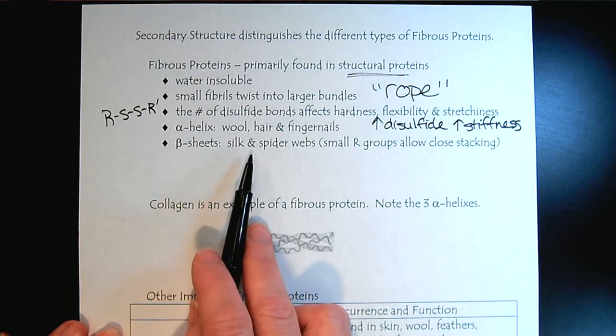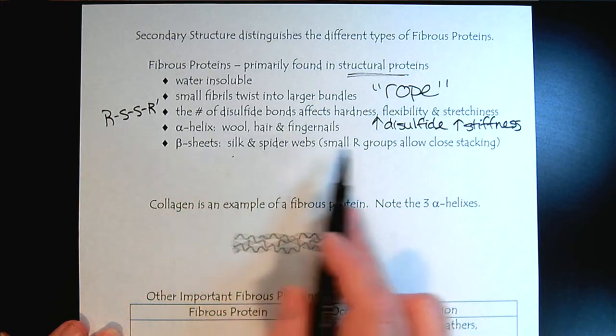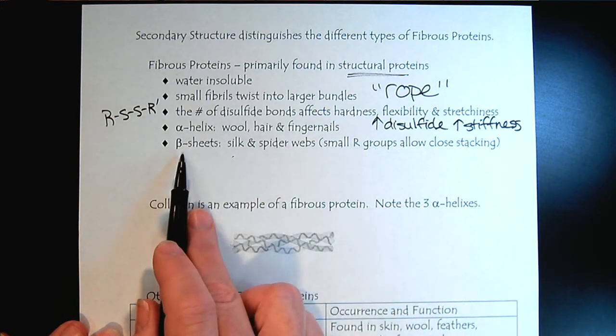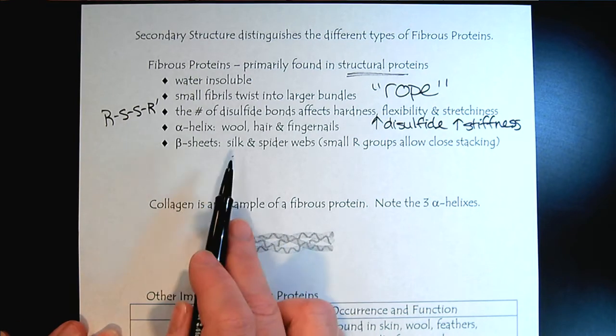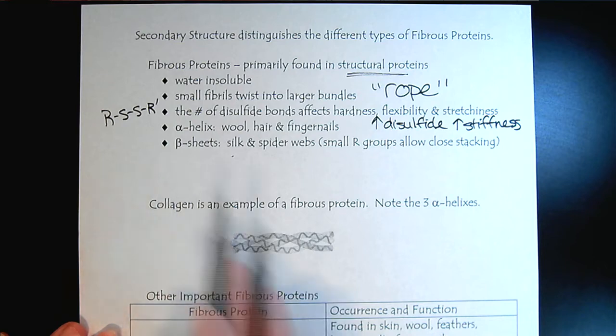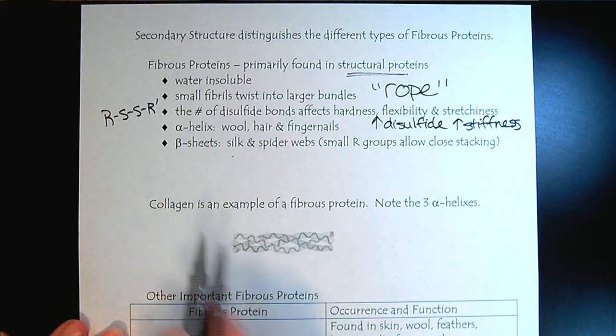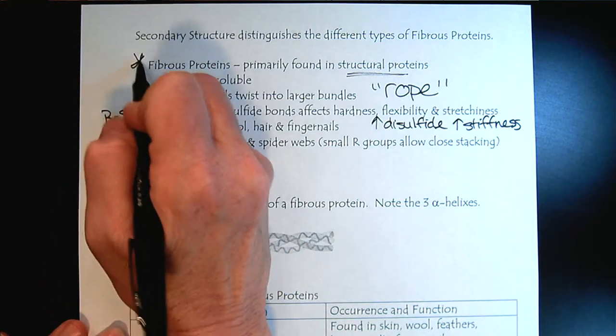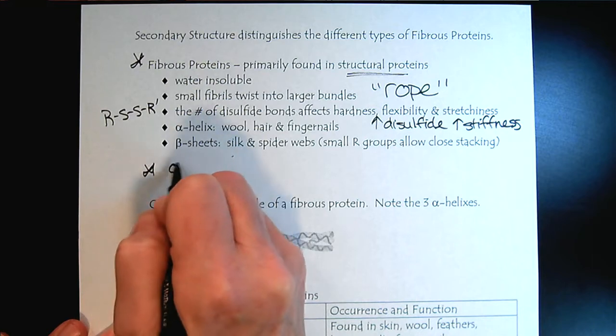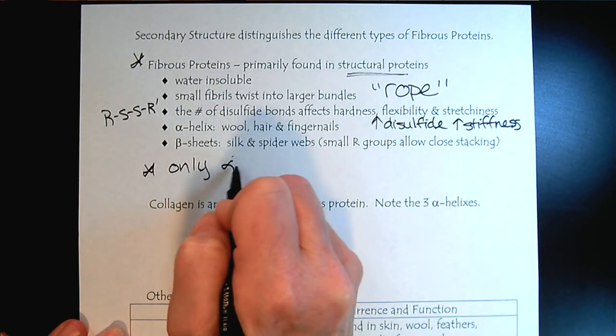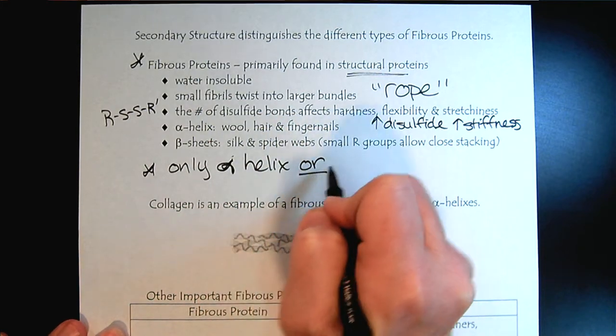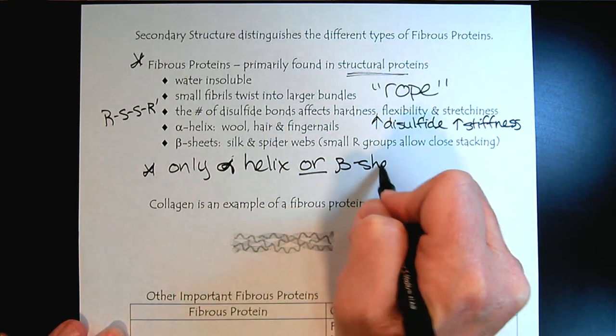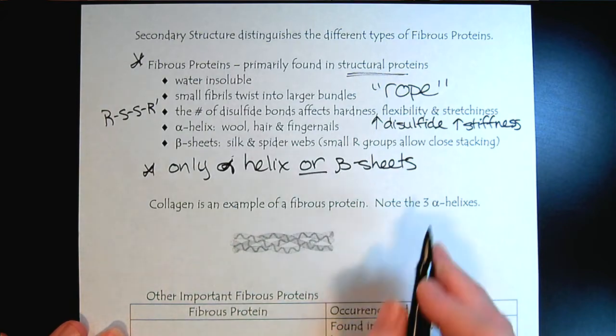As I mentioned on the previous page, silk and spider webs, those have the beta sheets. The important thing to note about the fibrous proteins in the secondary structure is that there is only alpha helixes or beta sheets in fibrous proteins.